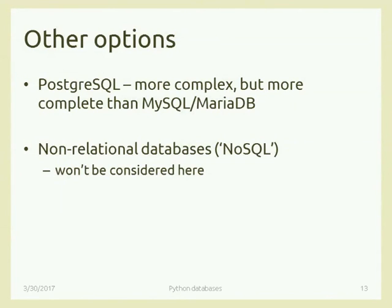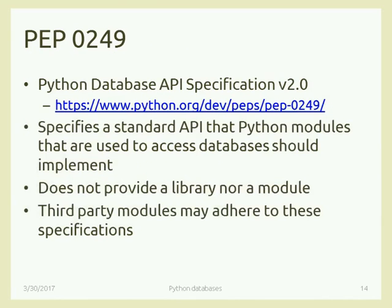NoSQL databases were invented because when you have too much data, SQL becomes too slow. You need a database that's faster with huge amounts of data because it doesn't check all integrity constraints and foreign keys — all the things a relational database is good at. But we don't need to go there in this course because we'll never have so much data in our projects. So let's dive into PEP 249 — the Database API Specification.